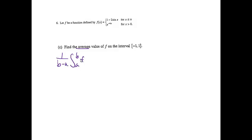Part C: find the average value of f on the interval negative 1 to 1. We use 1 over (b minus a) times the integral from a to b of that function. So we have 1 over (1 minus negative 1) times the integral from negative 1 to 1 of f. The only problem is we can't go from negative 1 to 1 directly because the function splits, so we split the integral at 0.